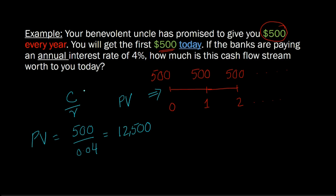Again, this formula, the C over R formula only applies when you have a perpetuity that is giving you the first cash flow or the first $500 in this case one year from now, which is not the case here. The first $500 that you're getting is right here at time period zero.